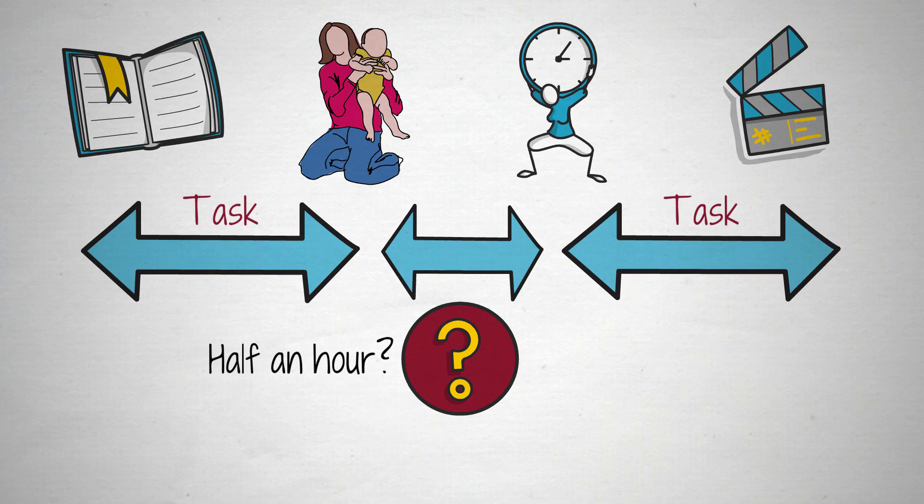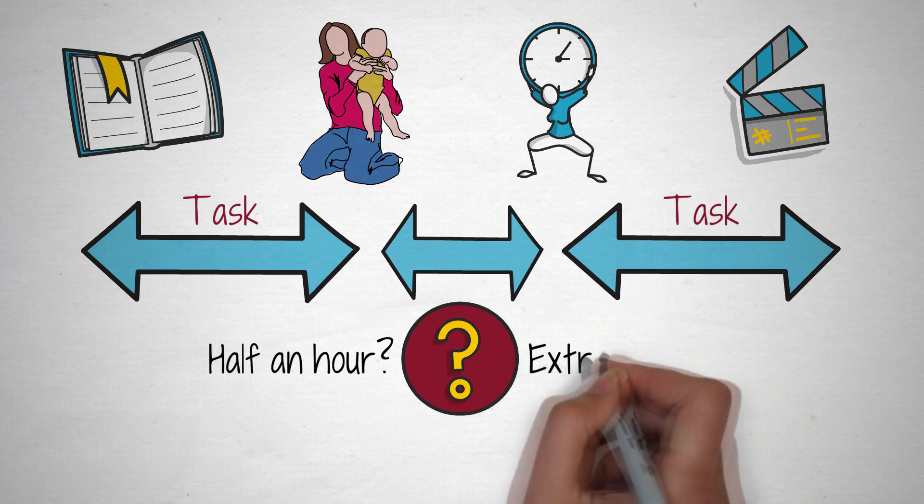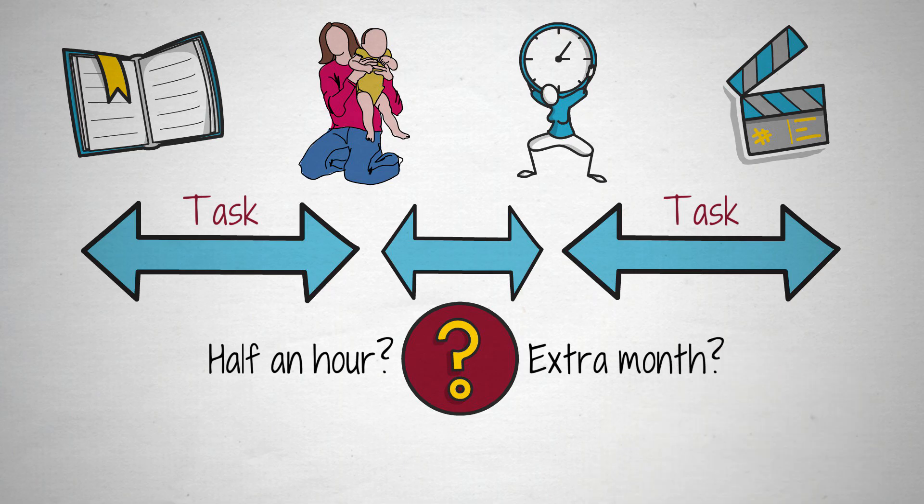Build in buffer time around all your projects to allow for the unexpected. Leave half an hour between meetings. Allow for an extra month before the book launch for cover design glitches and an extra edit. Assume the business will take three years to turn a profit, even if your predictions show it can be done in two.